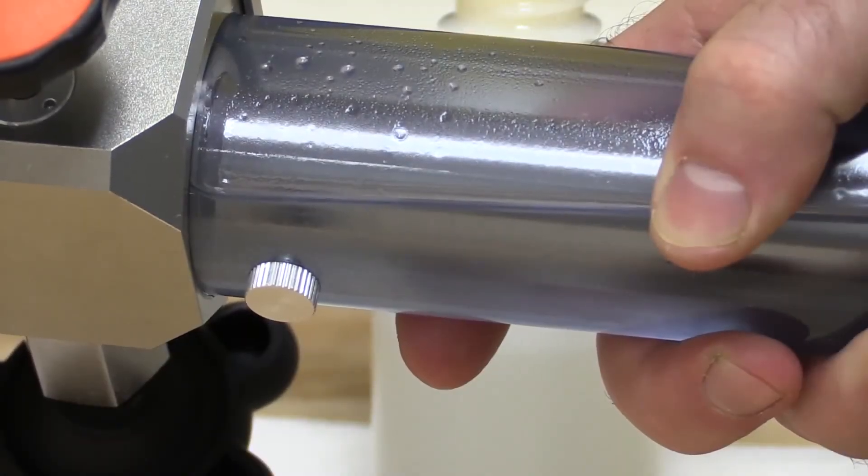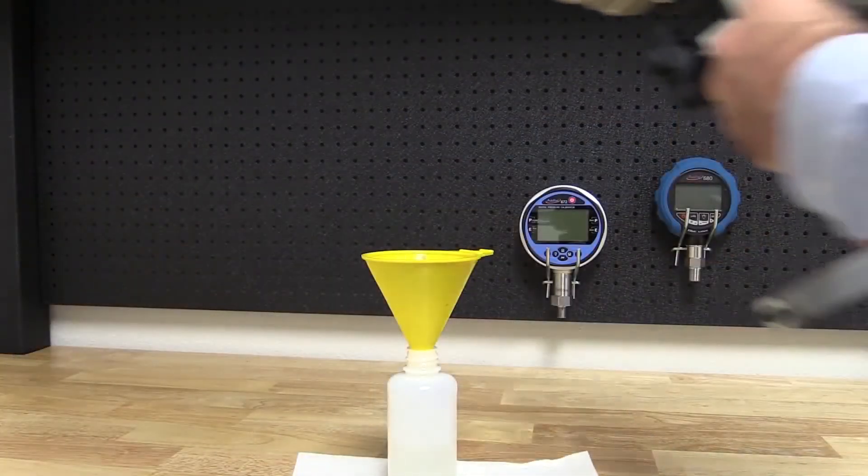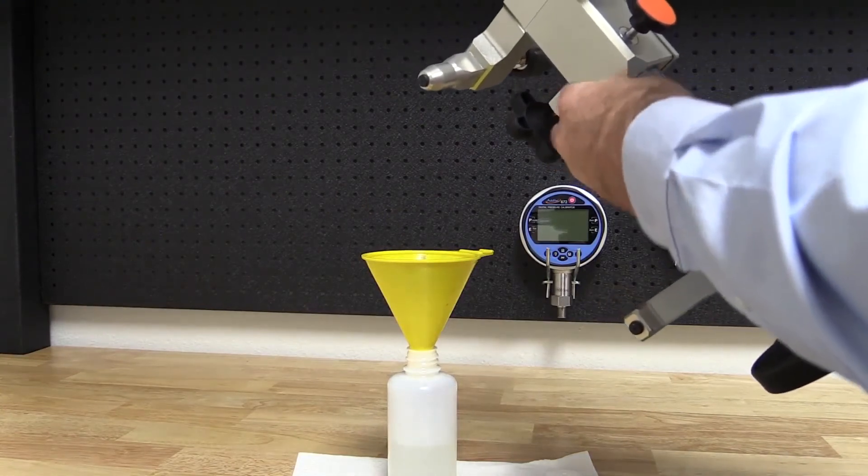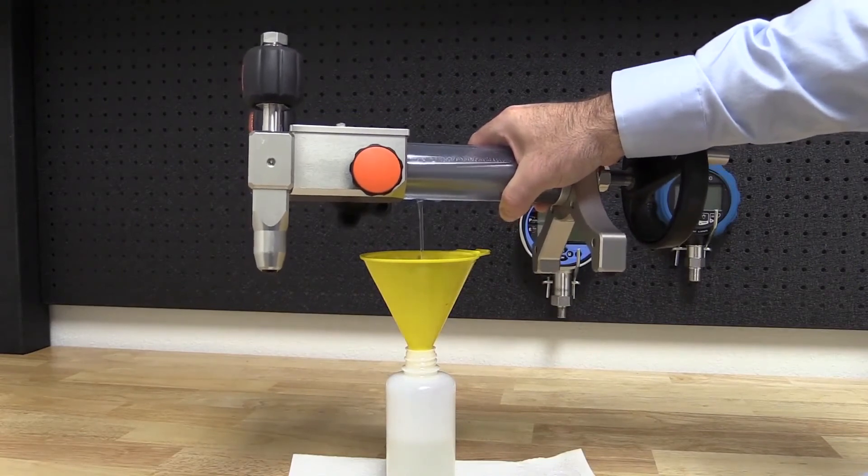Over time and use, the fluid in your pump will need to be changed. To do this, locate the drain valve at the bottom of the pump. It is helpful to tilt the pump in this manner to allow the fluid to drain into the clear reservoir, and then drain the fluid back into a container.